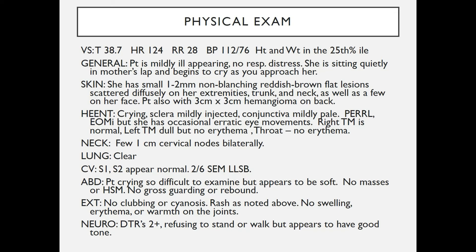She has a 3 cm by 3 cm hemangioma on her back. HENT: she is crying. The sclera are mildly injected; the conjunctiva appear mildly pale. Pupils are equal, round, and reactive to light. Extraocular muscles are intact, but she has occasional erratic eye movements. The right tympanic membrane is normal; the left is dull but without erythema. The throat has no erythema. She has a few 1 cm cervical lymph nodes bilaterally. Lungs are clear. Cardiac exam reveals a grade 2/6 systolic ejection murmur at the left lower sternal border.